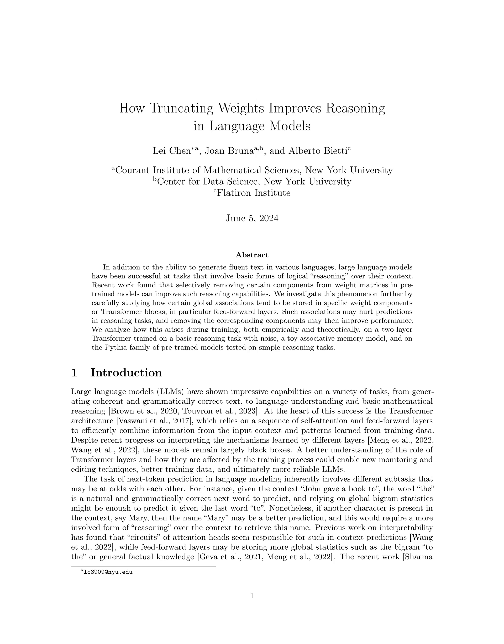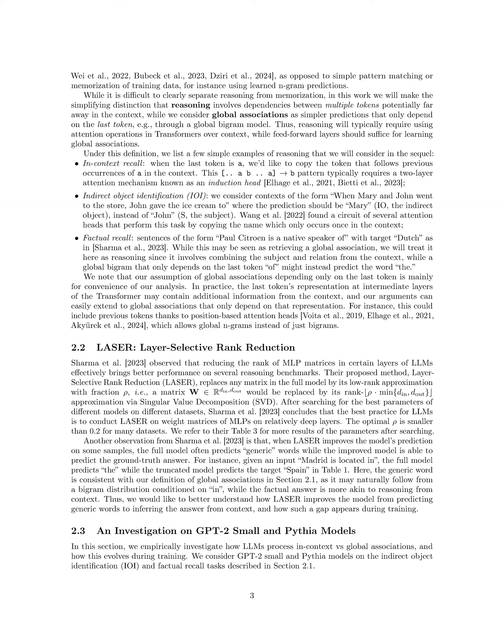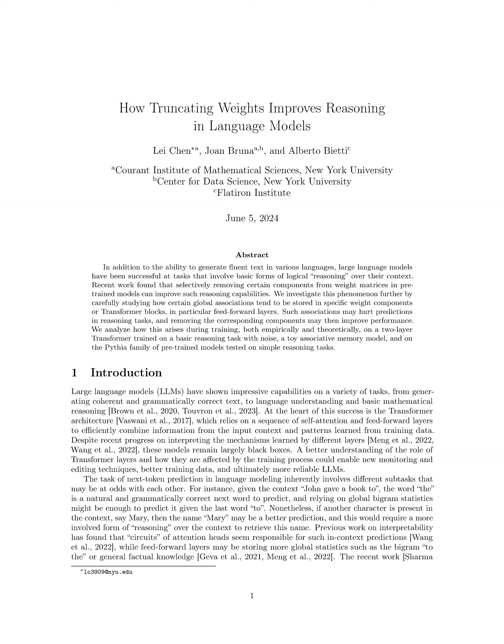Step 5: Evaluate the model's performance on reasoning tasks before and after applying LASER to observe the improvement in predicting contextually relevant tokens over generic words. Step 6: Analyze the impact of LASER on the model's ability to inhibit predictions of global associations, thereby enhancing in-context predictions. Step 7: Study the training dynamics of the model to understand how global associations are learned earlier than complex reasoning, and how selectively removing certain components through LASER can lead to better predictions in reasoning tasks.